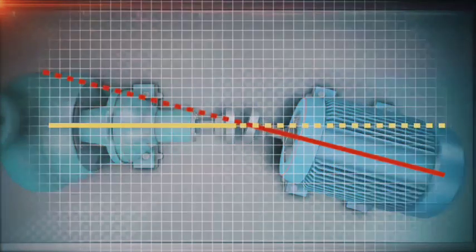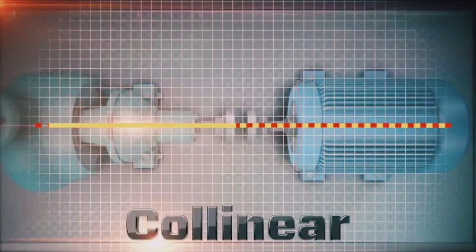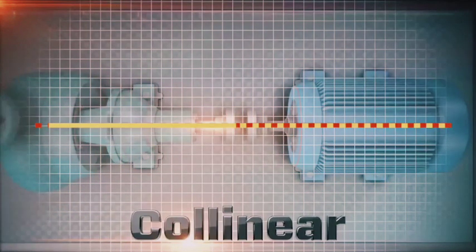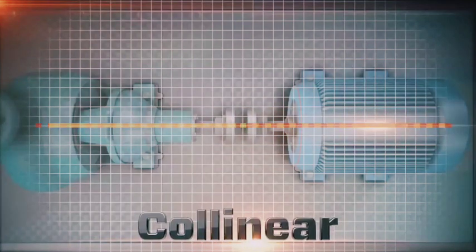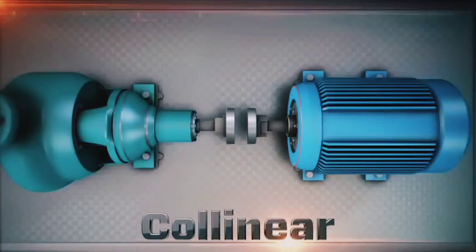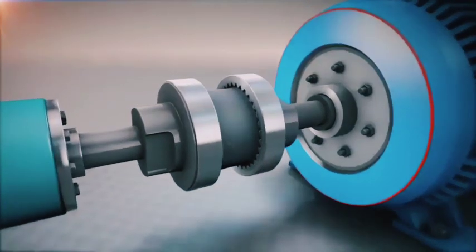Forget for a second that we are aligning two machine shafts. Instead, imagine two simple lines that represent the shafts. The goal of an alignment technician is to adjust these two lines to be collinear. Collinear means that two lines are positioned as if they were one single line.